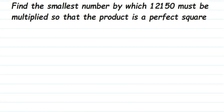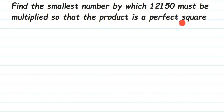Here's a question on squares and square roots. The question is: find the smallest number by which 12150 must be multiplied so that the product is a perfect square. This number is not a perfect square, and we have to make it a perfect square by multiplying the smallest number.